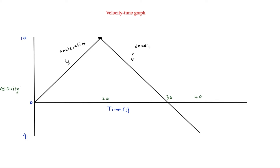So although it is decelerating, it is still moving forward. That is unlike a displacement-time graph where a downward slope meant it was moving backwards. Here I'll note: decelerating, but moving forward.